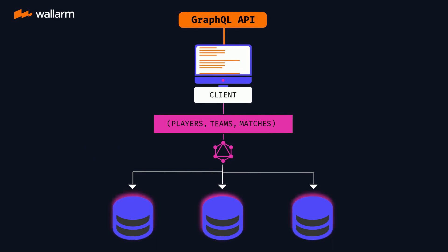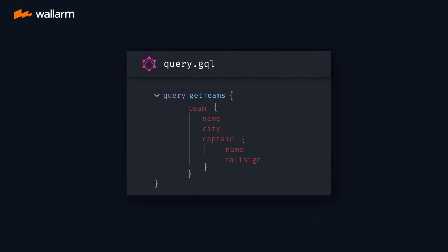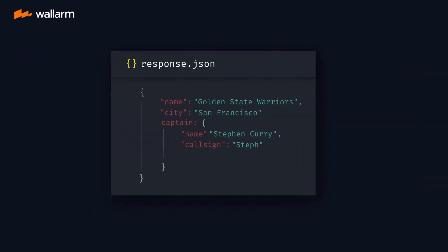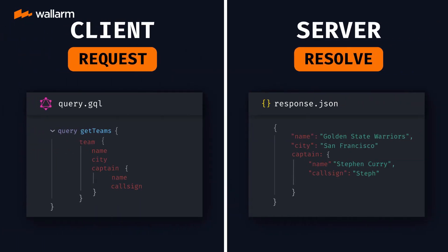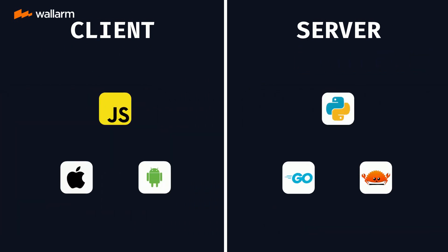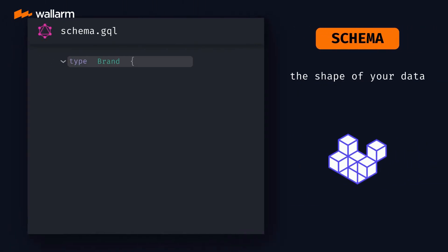Data is fetched by describing it with a syntax that mirrors its return shape in JSON. The front-end developer describes the data they want, while the backend developer writes code to resolve the request, and it all happens in a syntax that can work with any programming language.